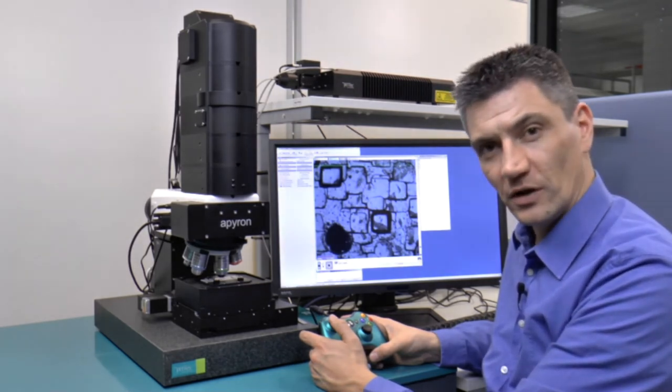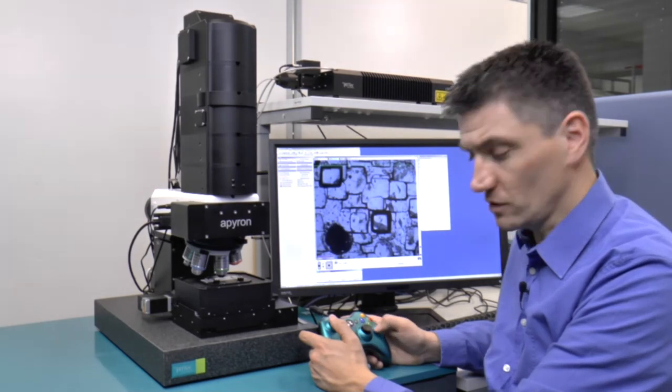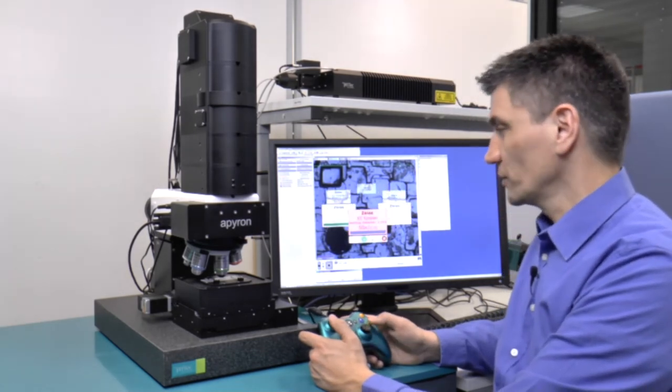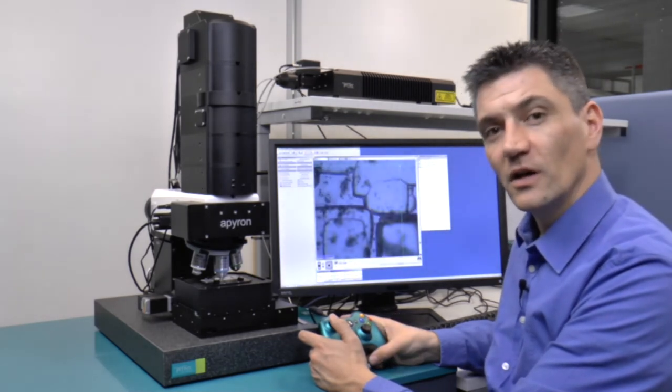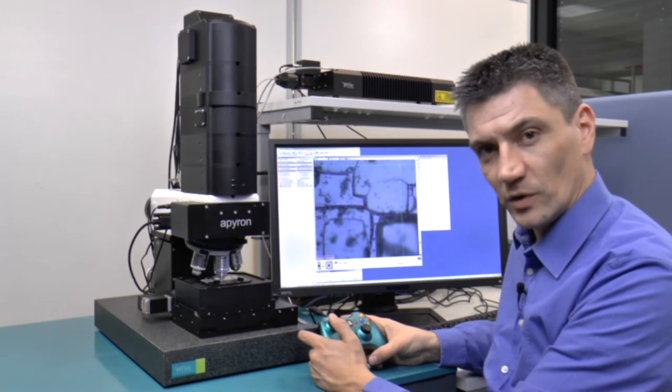At the moment we've chosen the 20x objective, but we can simply change this by selecting, for example, the 50x objective. It now compensates for any XYZ offset and does an automatic white light illumination adjustment.